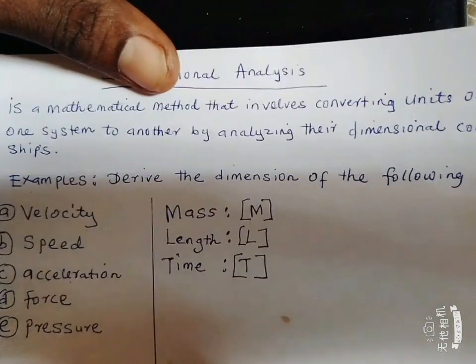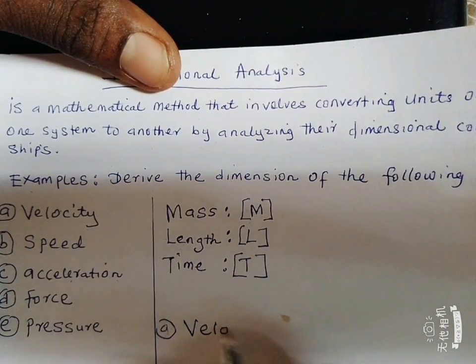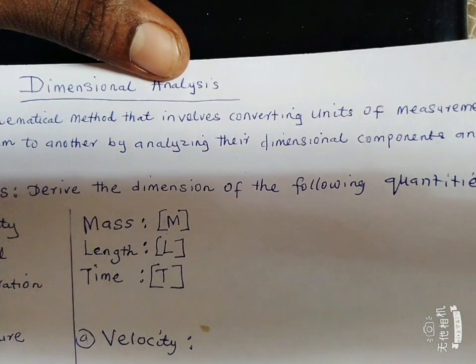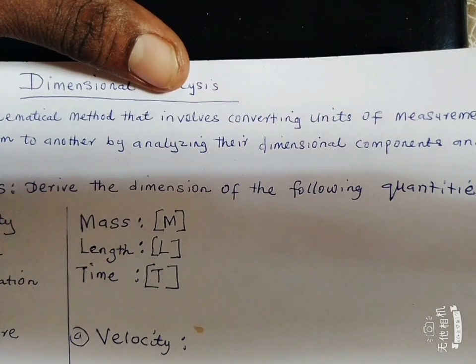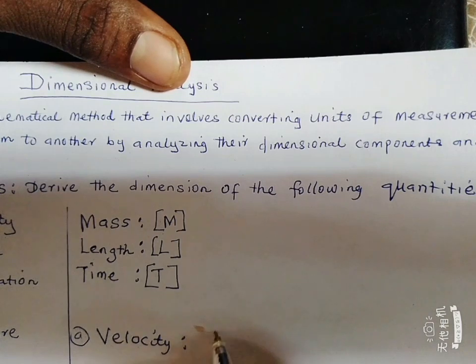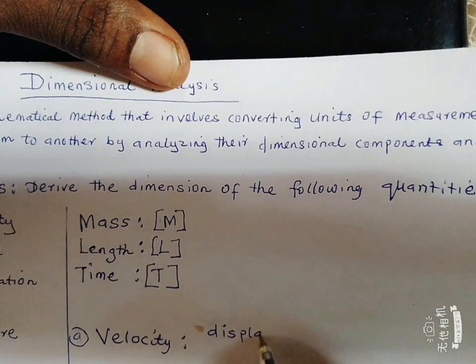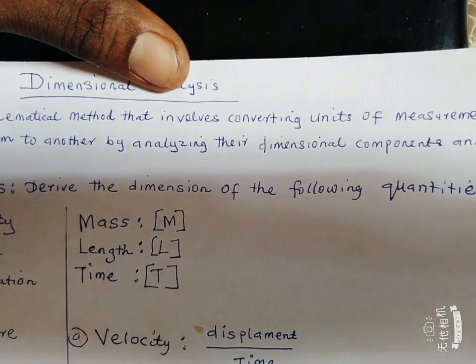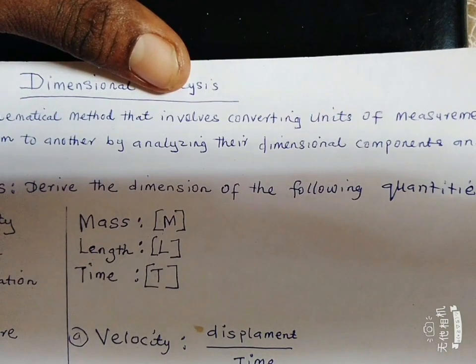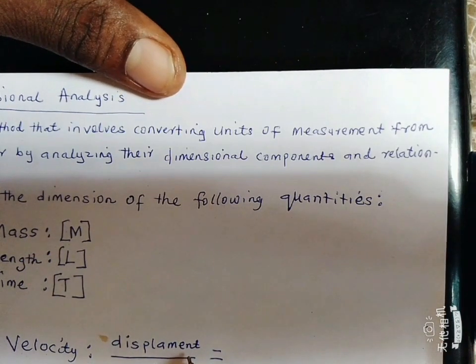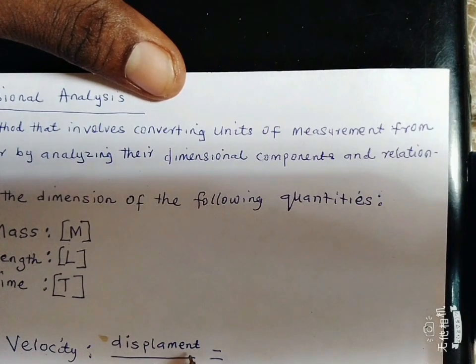Let's look at the first one, A, velocity. Now, how do we find the dimension of velocity? You ask yourself, what is velocity? Velocity can be defined as the rate of change of displacement with respect to time. Then, mathematically, we'll write it as displacement over time divided by time. So, this is the mathematical representation of velocity, displacement over time. And this equals, our displacement is measured in length.